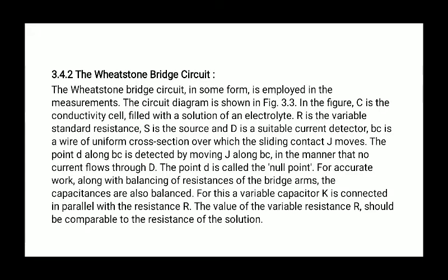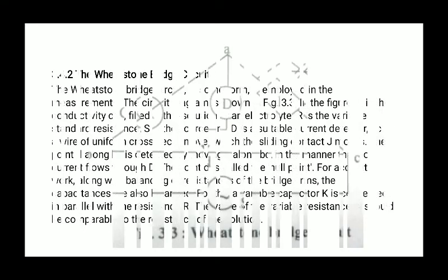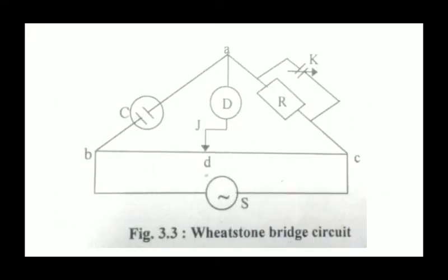Wheatstone bridge circuit. Wheatstone bridge circuit in some form is employed in the measurement. The circuit diagram is shown in this figure. In the figure, C is the conductivity cell filled with solution of an electrolyte. R is the variable standard resistance, S is the source, and D is a suitable current detector. The small BC is the wire of uniform cross-section over which the sliding contact J moves.